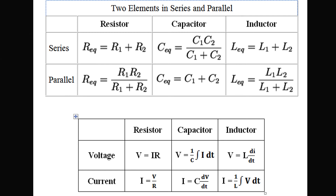The voltage across the inductor is L times the rate of change of current with respect to time, that is L times dI by dt. The current across the inductor is 1 over L times the integral of V dt.